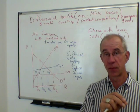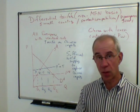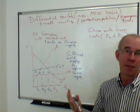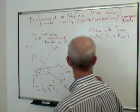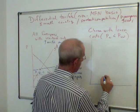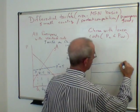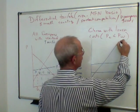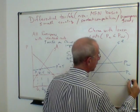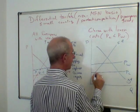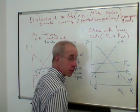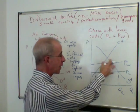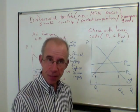A tariff on one particular producer into the United States while letting others in free will have no effect on domestic consumption or domestic production. What it will do is simply price the Chinese out of the U.S. market, because they have to pay the tariff and other foreigners do not. So with identical costs and sufficient foreign supply to replace the targeted imports, there are no effects on domestic consumption and production — this provides no protection to the domestic industry and only eliminates Chinese imports.